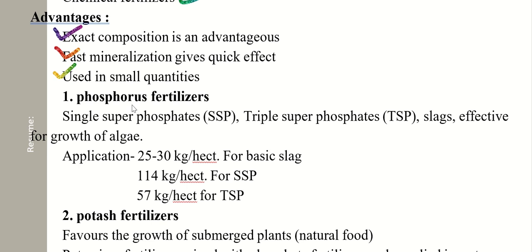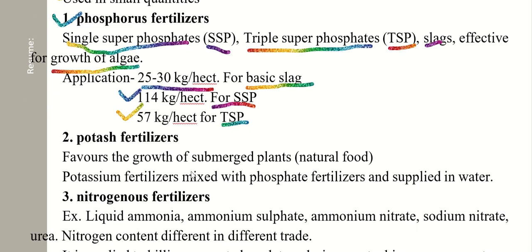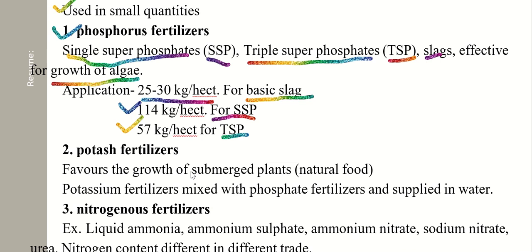Phosphorus fertilizers include SSP (single super phosphate), TSP (triple super phosphate), and basic slags. These are applied in the pond for the effective growth of algae. The application rate is about 25 to 30 kilograms per hectare for basic slag, 114 kilograms per hectare for SSP, and 57 kilograms per hectare for TSP.